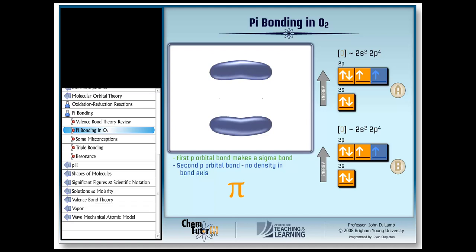Pi bonds typically form from side-by-side overlap of p-type atomic orbitals, just as you saw here. Notice that to form the pi bond, we did not hybridize the atomic orbitals. In fact, this is pretty much always true.